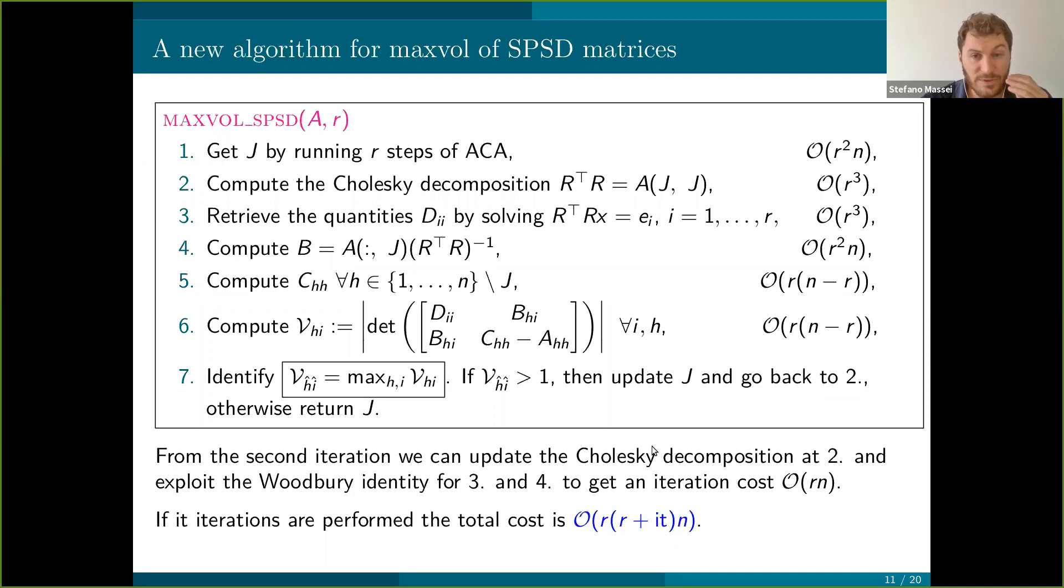We can actually do slightly better in terms of complexity by observing that from iteration two, all these matrices here are rank two updates of the previous one. So again, one can go by updating the Cholesky decomposition and using the Woodbury identity to compute the updates. This reduces by a factor R this complexity here. At the end of the day, you can provide a procedure that in the case of it iterations has a complexity of R times R plus it times N.